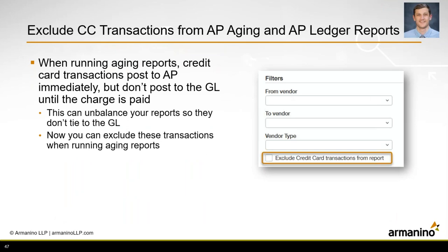Another AP change is the ability to exclude credit card transactions from your AP aging and AP ledger reports. Credit card transactions post to accounts payable immediately but don't post to the general ledger until the charge is completely paid, which can unbalance your AP ledger and vendor aging reports. With this release, you can exclude these credit card transactions when running both the ledger and AP aging reports. Simply open the vendor aging or AP ledger report and check the box in the filter section that says 'exclude credit card transactions from the report.'